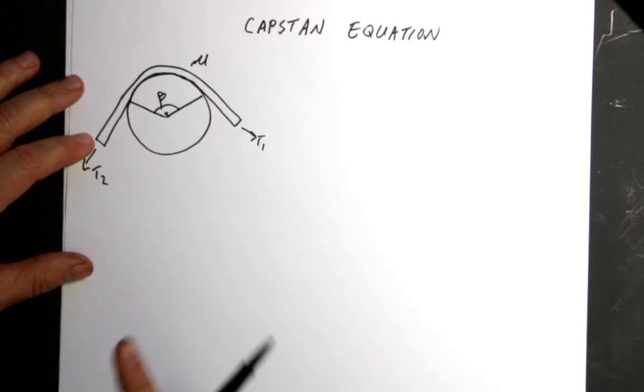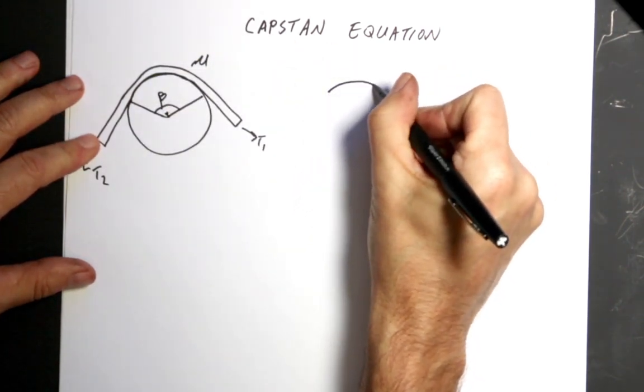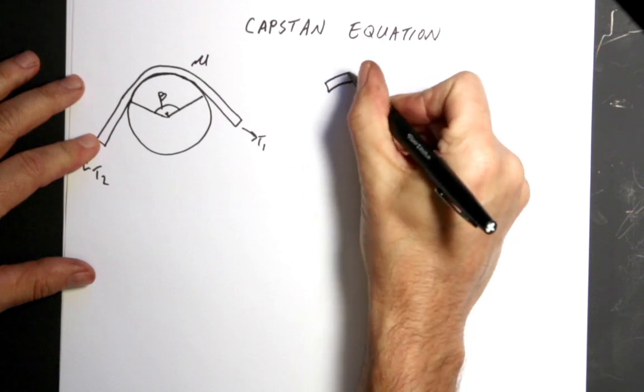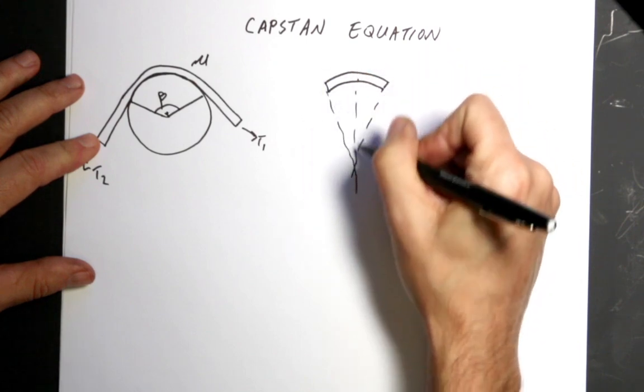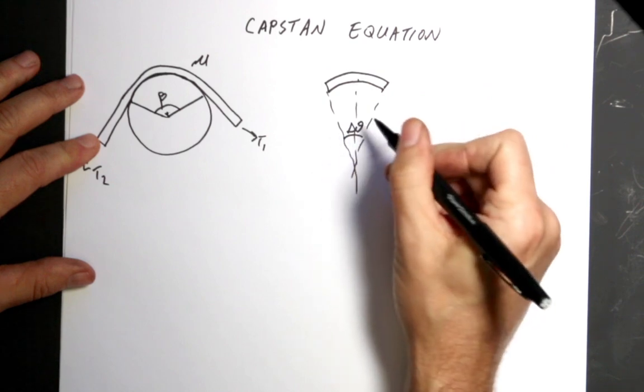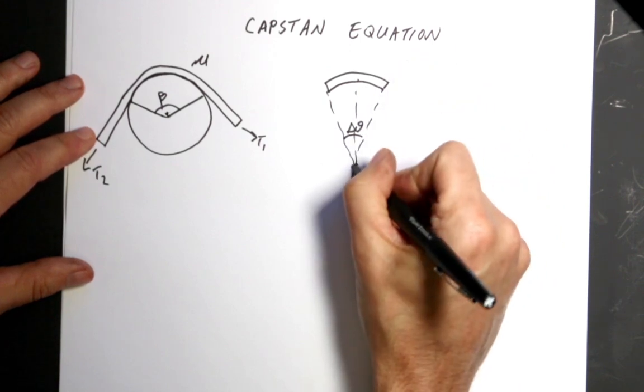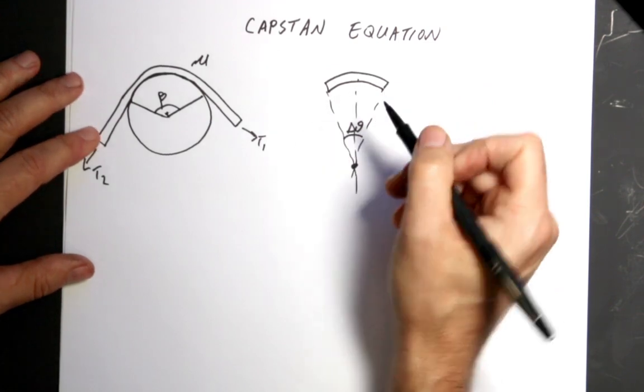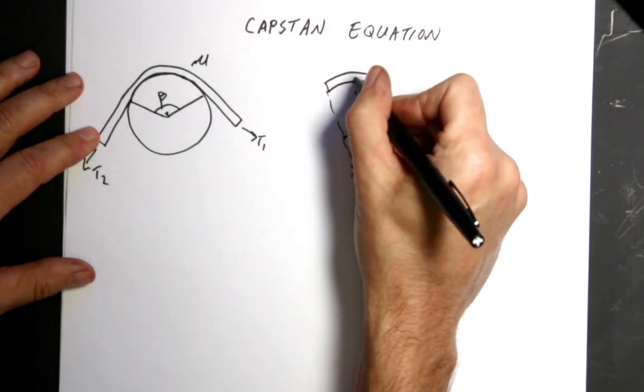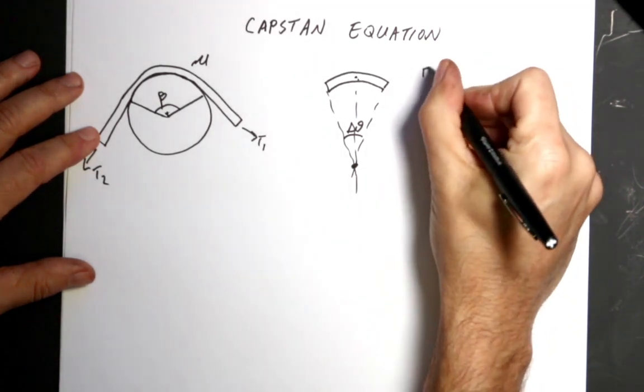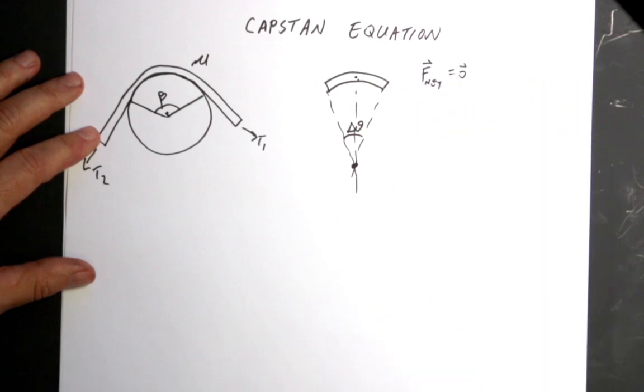So let's look at a small piece of this string. So I'm just going to draw just a piece of the string. And this is blown up. It's right there. So this is some angle delta theta. So this piece is in equilibrium. And it's a massless string for now. And I think maybe this would be a great homework problem to see what happens if the string has mass.